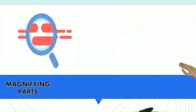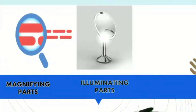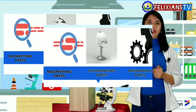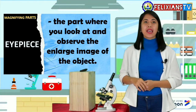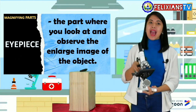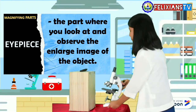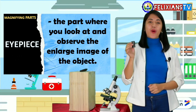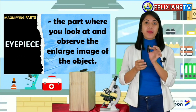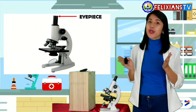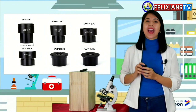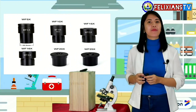First, the magnifying parts. Second, the illuminating parts. And the last is the mechanical parts. So, let us first discuss the magnifying parts. This includes the objective lenses and the eyepiece. So, this is the eyepiece. The eyepiece is the part where you look at and observe the enlarged image of the object. As you can observe, the eyepiece has a written number on top of it. Do you know the use of this number? This is the magnification. It shows the number of times the image will be magnified.